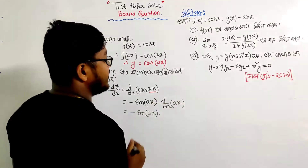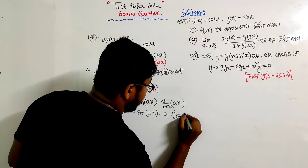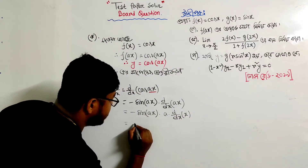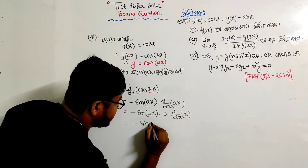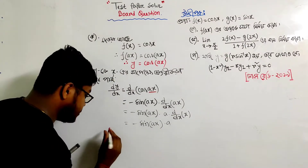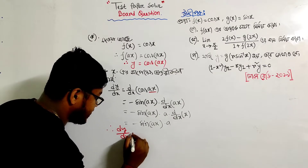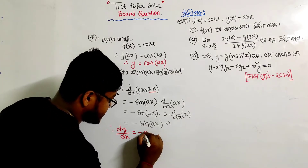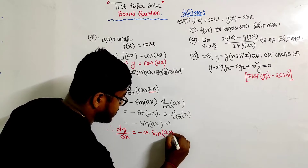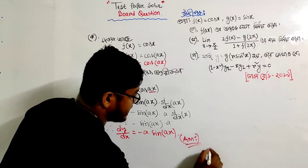ddx of a·cos(ax) equals minus sin(ax) into a. So this is the answer.